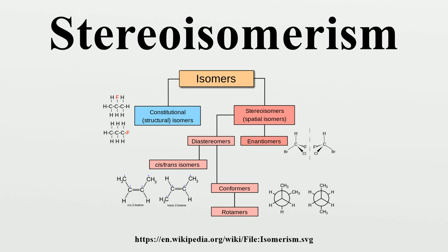Enantiomers are two stereoisomers that are related to each other by a reflection — they are mirror images of each other that are non-superimposable. Human hands are a macroscopic analogue of stereoisomerism, where every stereogenic centre in one has the opposite configuration in the other. Two compounds that are enantiomers of each other have the same physical properties, except for the direction in which they rotate polarized light and how they interact with different optical isomers of other compounds.